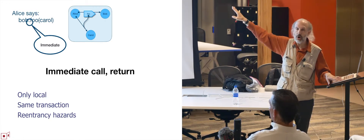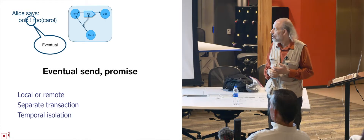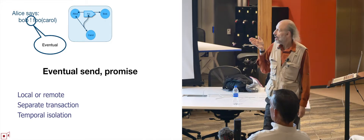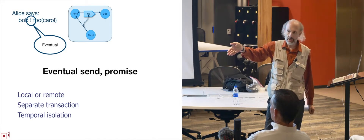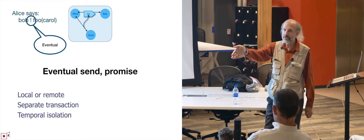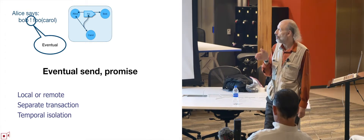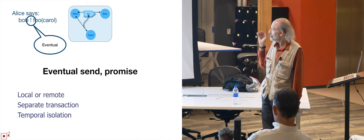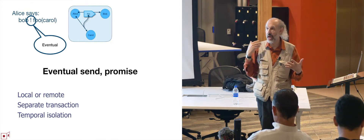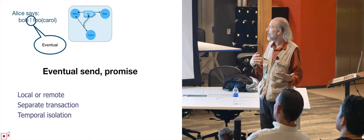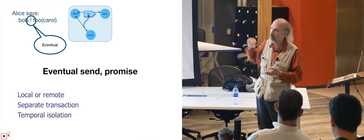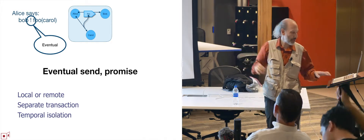We introduce this infix-bang operator — the eventual send operator — that does an asynchronous invocation. It sends the message foo to bob eventually, to be delivered in a separate transaction. When Alice sends that message off, it immediately returns a promise for what the result will be. Now Alice and Bob are protected from each other. Alice's transaction completes without being affected at all by Bob's activities in reaction to the message. When Bob receives the message, that starts a new transaction. They have nice temporal isolation. So now Bob can be local or remote — Alice doesn't have to care where Bob is. It's the same programming paradigm.